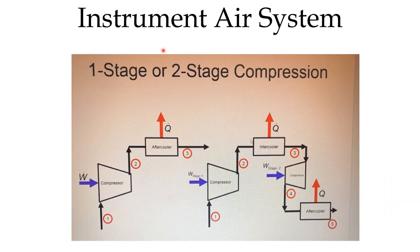Here is the schematic of a single stage and two stage compressor. The single stage compressor has only an aftercooler. The two stage compressor has an intercooler between the first and second stage, and an aftercooler after the second stage, going to the plant air receiver followed by the instrument air dryer.